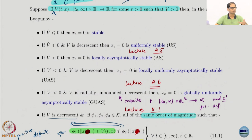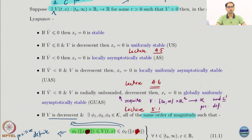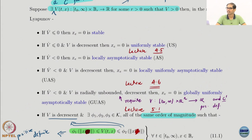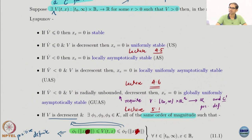If you have things like (x1 + x2) whole squared, that cannot be definite. This is something you need to remember — it should be at the back of your mind that if the function can be 0 anywhere other than the origin, other than the zero state, then there is a problem.